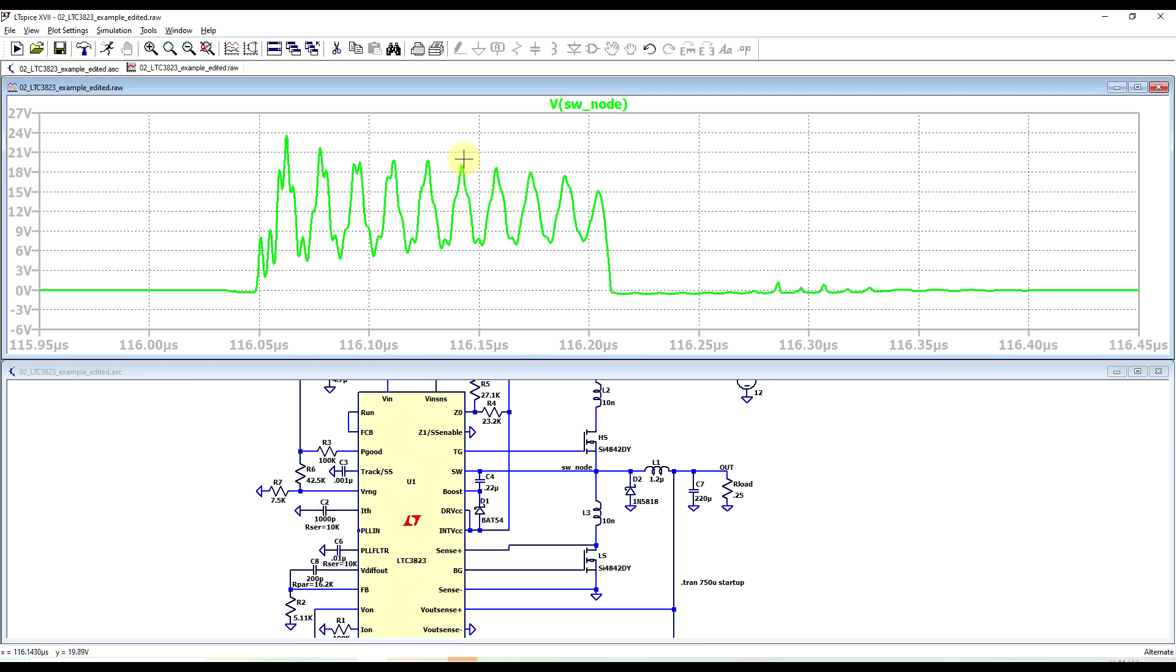And if we look really closely, the oscillation when the voltage is high is at about 63 megahertz, whereas the other oscillation is at about 94 megahertz. So what happened? Where did this come from?